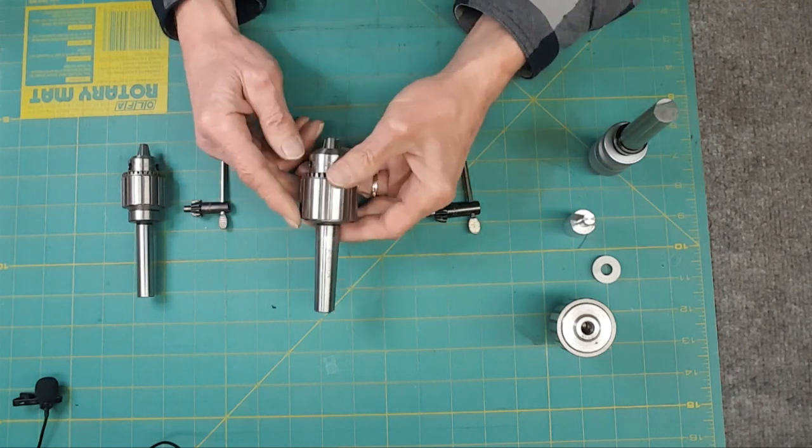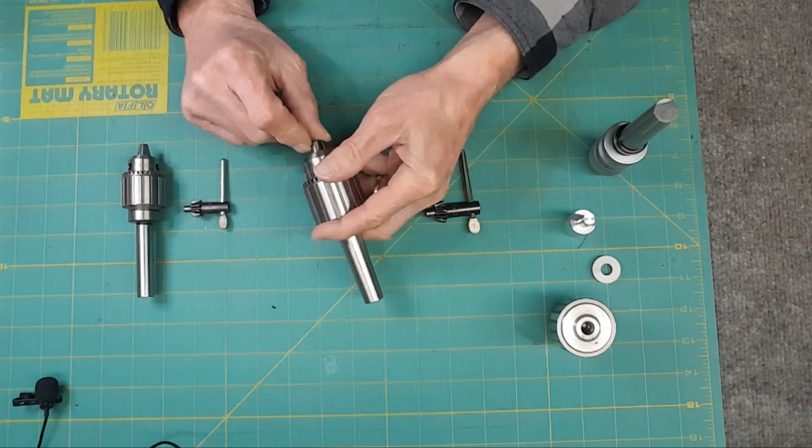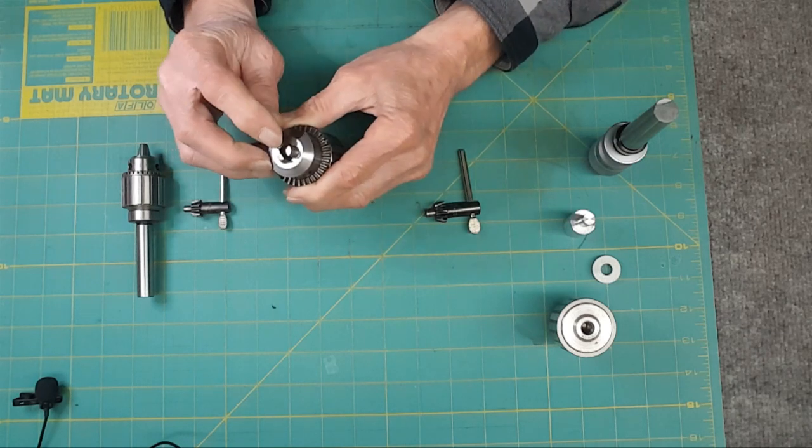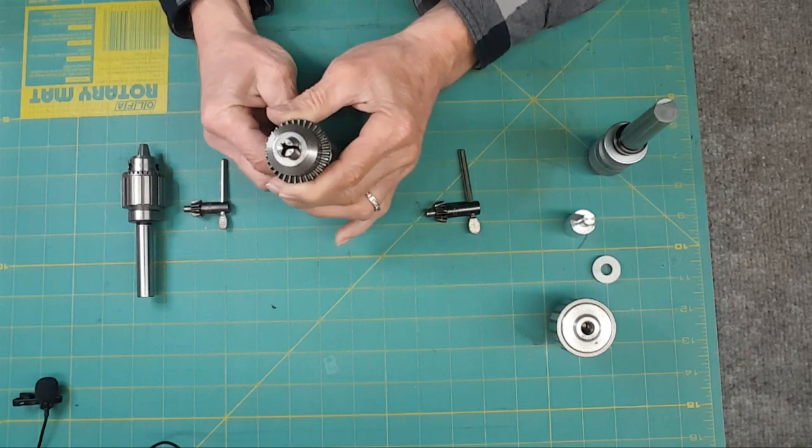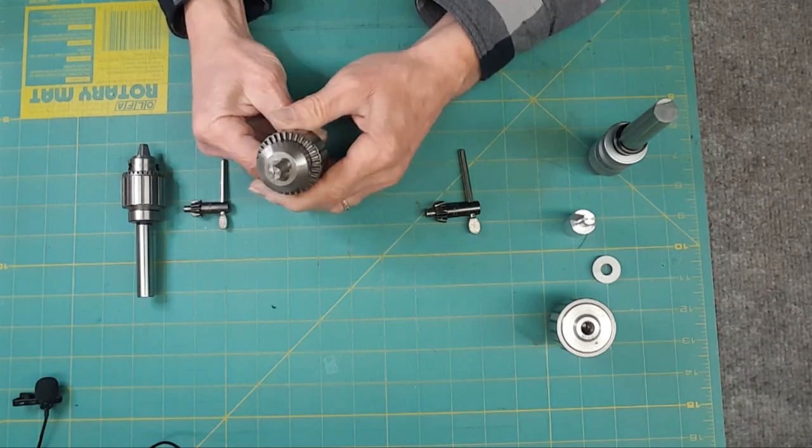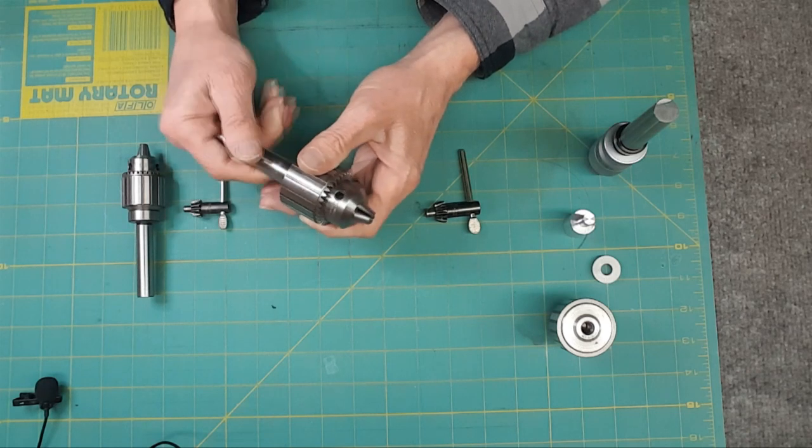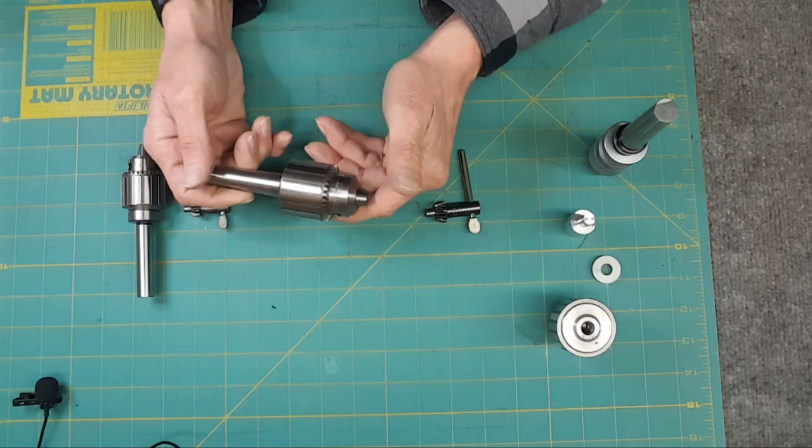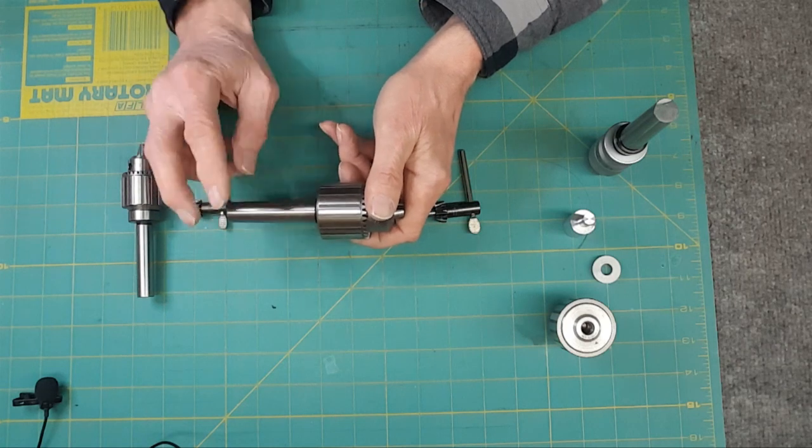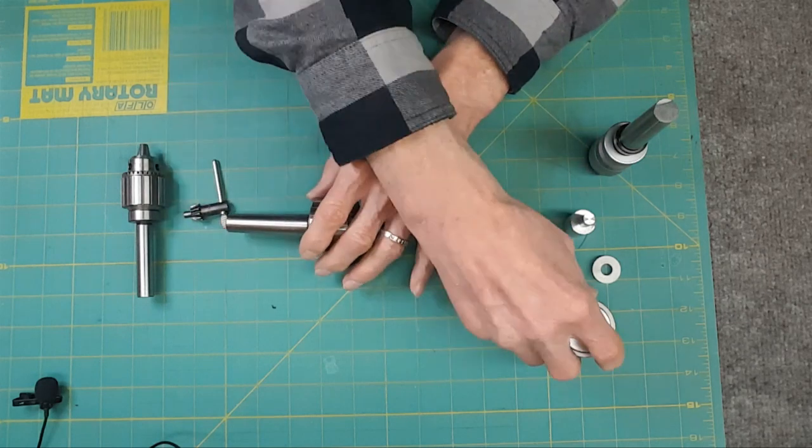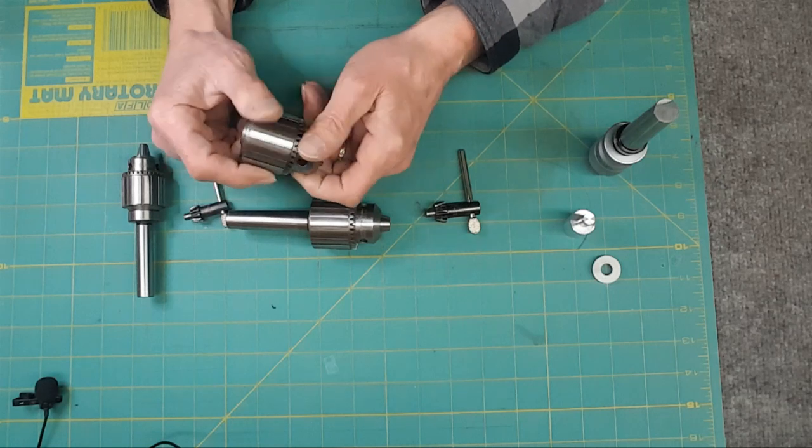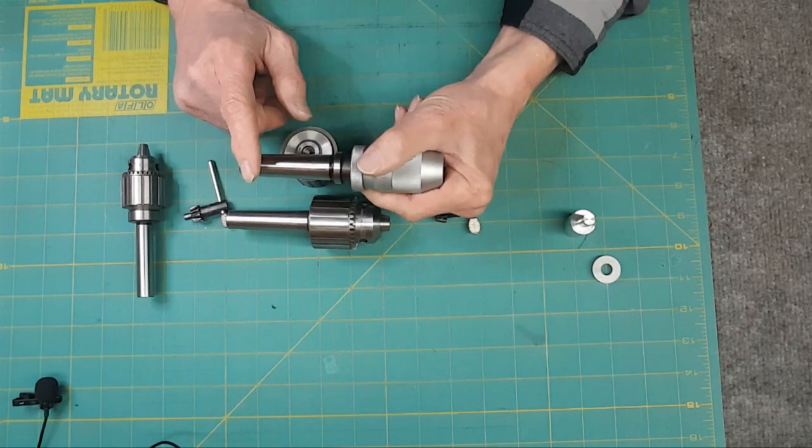So I could tear this chuck apart and the arbor. Replace the jaws. And I basically have a brand new chuck that I love. This guy, like I said, is the Jacobs 2B. It covers zero to three eighths. Or zero to about nine and a quarter millimeters. And yes, zero. Because you can see there's points on it. So when you close it up, there is no room for anything in there. It's zero. So I love that. You can use this on small bits or whatnot.